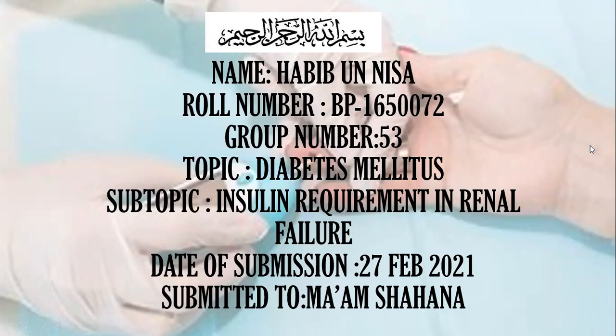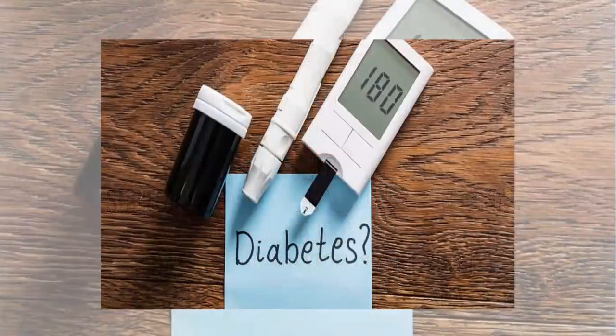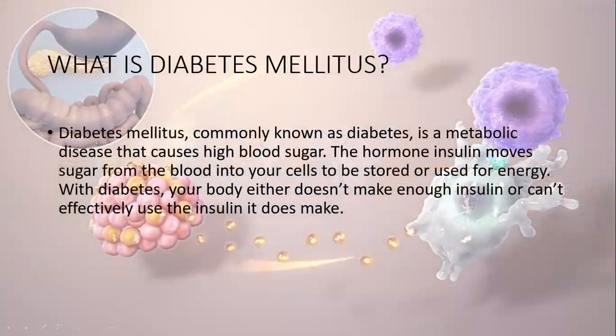So there must be a question arising in your mind: what is diabetes mellitus? Diabetes mellitus is a disorder which is very prevalent throughout the whole world and most people of every age are getting affected by it. Diabetes mellitus, commonly known as diabetes, is a metabolic disease that causes high blood sugar. The hormone insulin moves sugar from the blood into your cells to be stored or used for energy. With diabetes, your body either does not make enough insulin or cannot effectively use the insulin it does make.